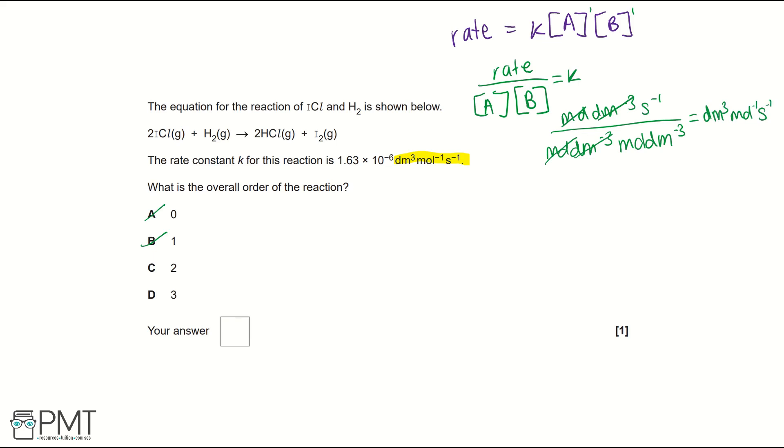That's because our decimetres cubed and moles are on the bottom, so we invert the indices. So the decimetres to the minus 3 becomes decimetres cubed, moles becomes moles to the minus 1, and then seconds will remain the same because it's on the top, it's not being divided by anything. And we can see that these units match our rate constant in this question.